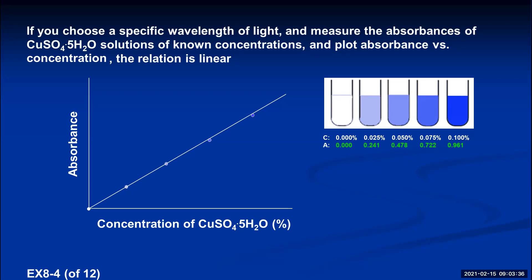That linear relationship is really important because once we make a calibration line, if we measure the absorbance of an unknown sample and read over to the line and down to the x-axis, we can determine the concentration of the copper-2 sulfate pentahydrate in that particular solution. In the experiment today, a series of standard solutions of known concentrations will have their absorbances measured, and a graph like this will be produced using LoggerPro.